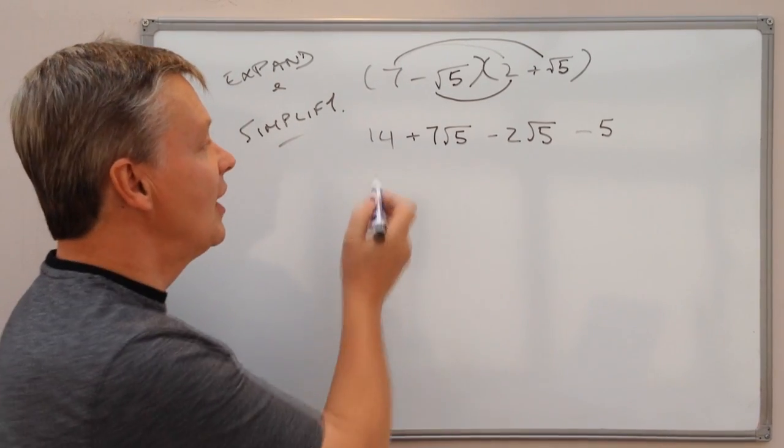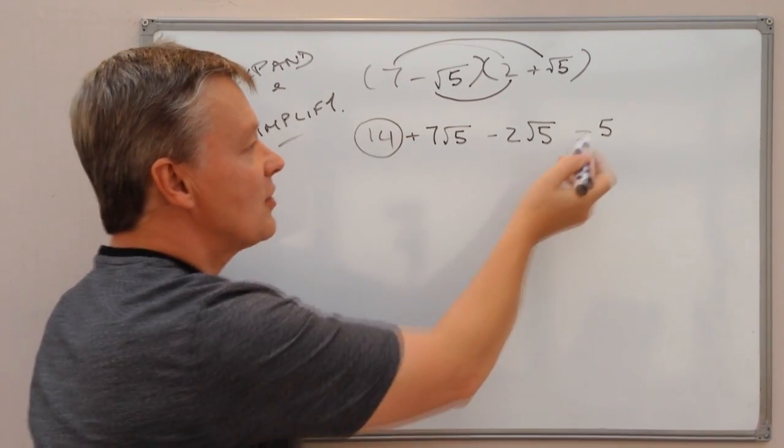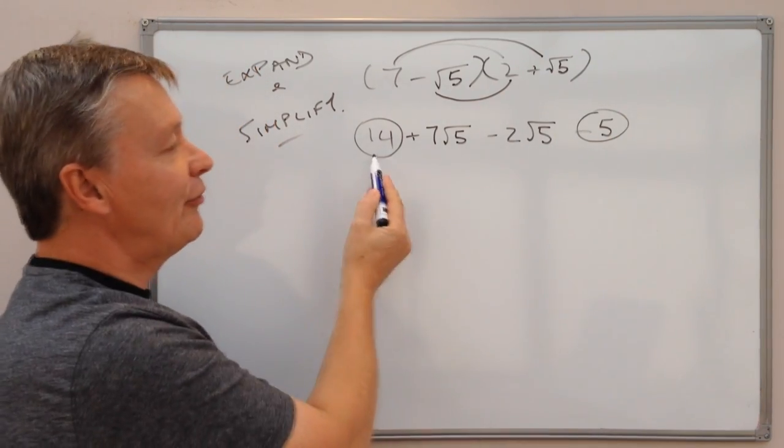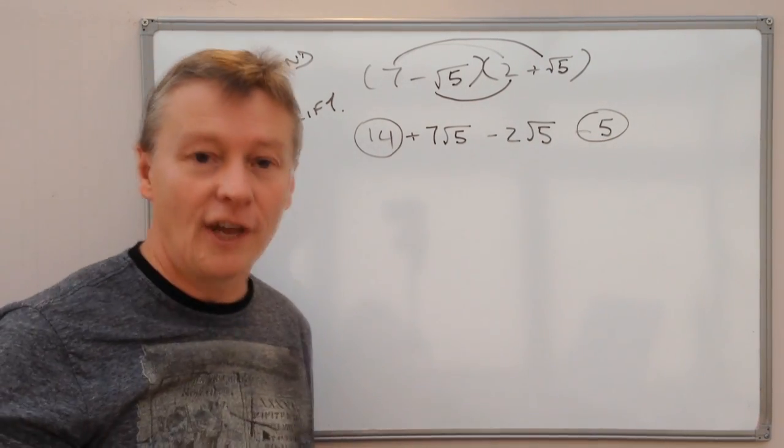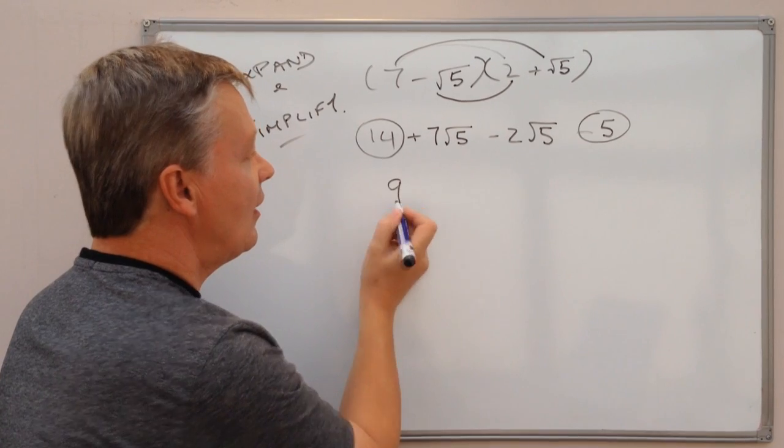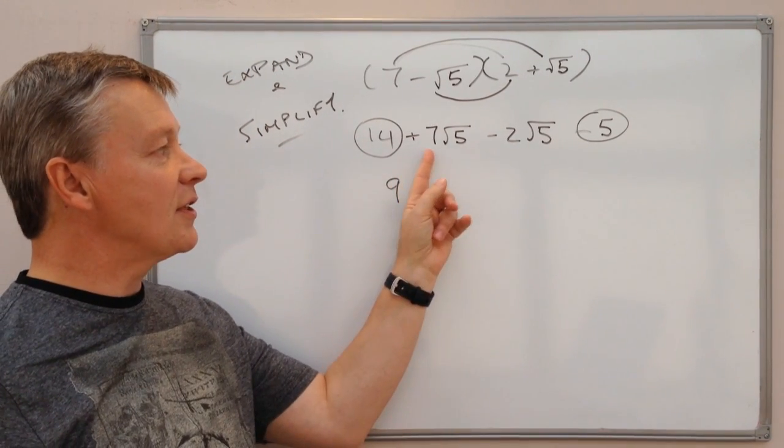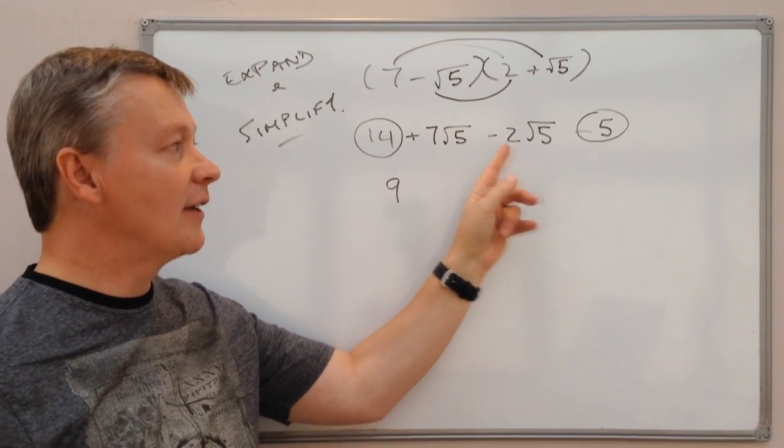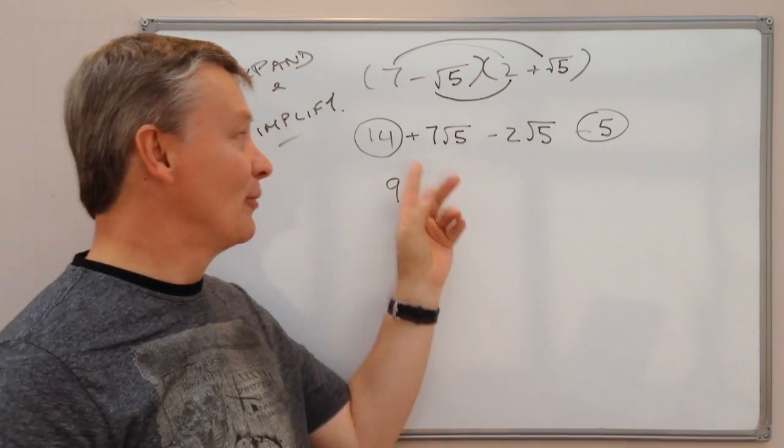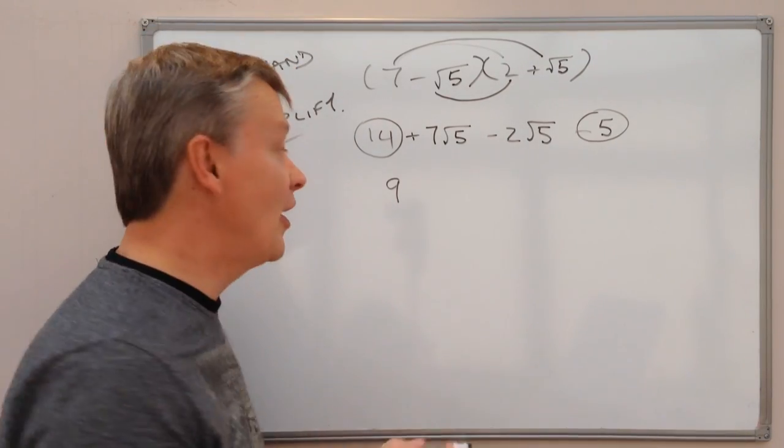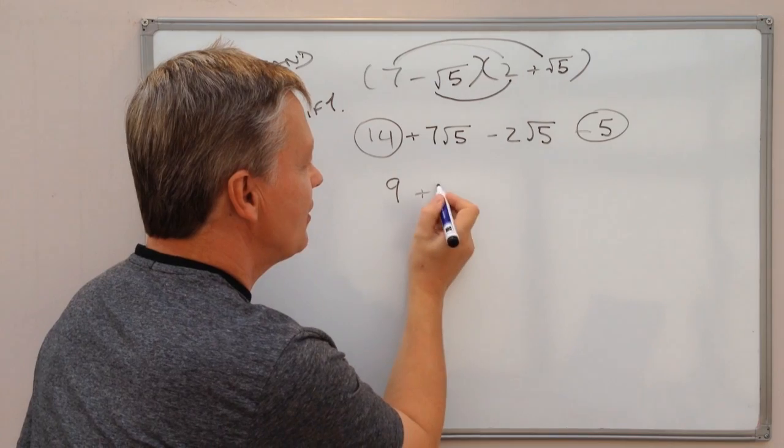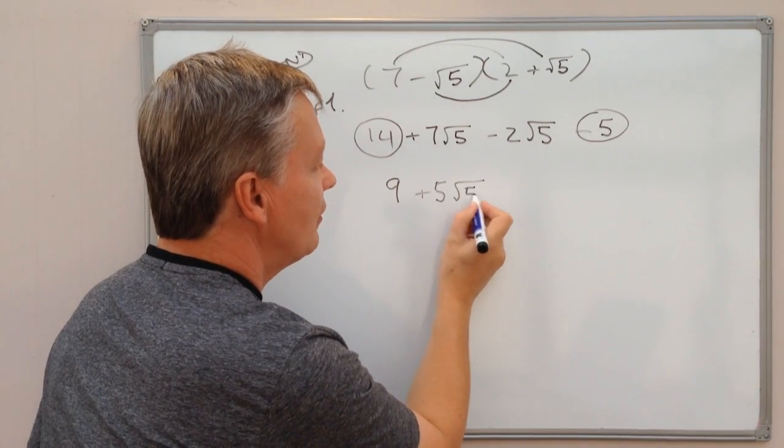So the first thing I'm going to do is gather up the integers themselves. So I've got 14 minus 5, well that's going to give me 9 and then I've got positive 7 root 5 minus 2 root 5, well 7 minus 2 is 5, so it's going to be positive 5 root 5.